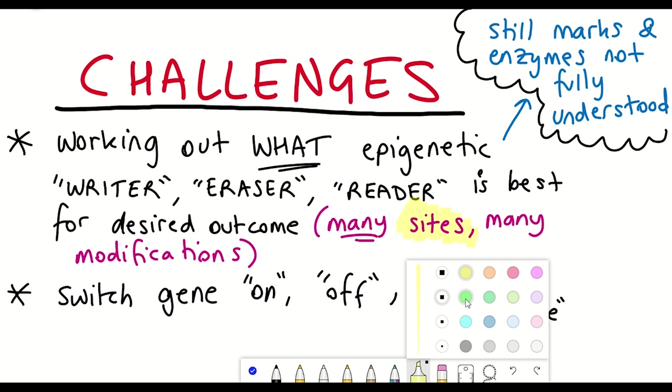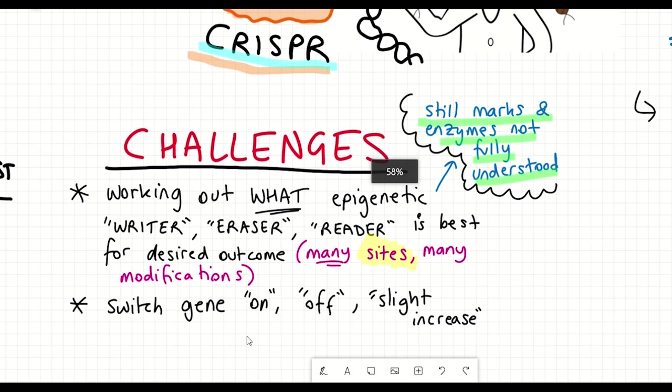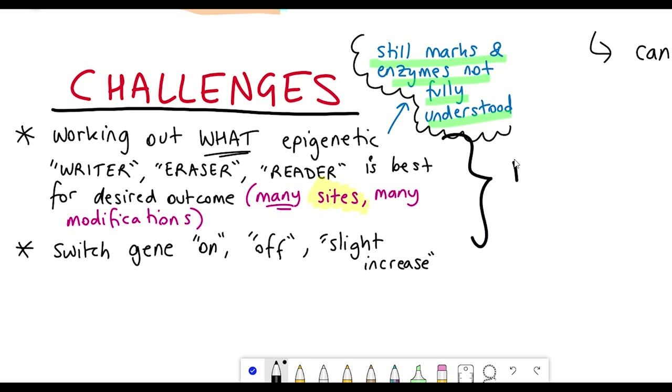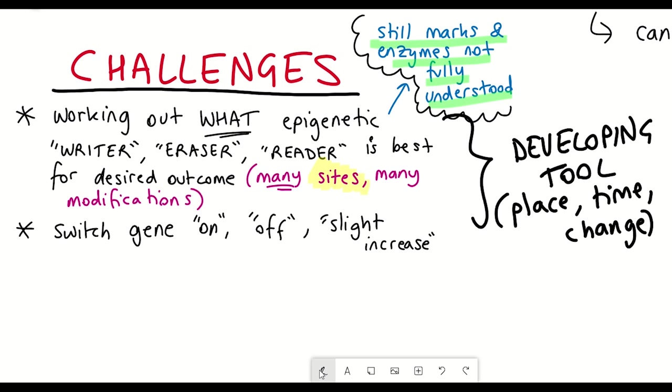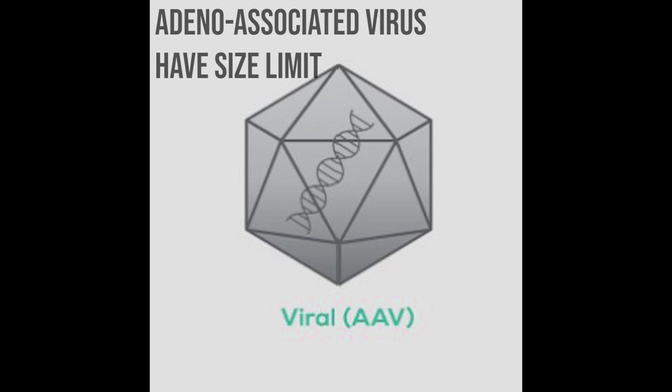So yeah, one general problem is just developing the tool and getting it to the right place at the right time. And then if we want to think about long-term translates into the clinic, then we want to talk more about delivery approaches. And if you're going to fuse Cas9 to these different enzymatic domains, you've made that Cas9 protein bigger. And these adeno-associated viruses that can deliver CRISPR machinery can only contain so much DNA. And so if you increase it by having these fusion proteins, you might have some problems with delivery.